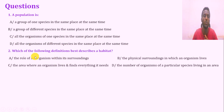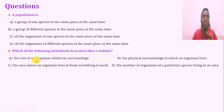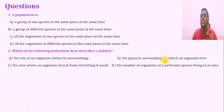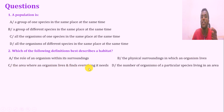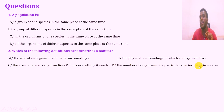Question number two: which of the following definitions best describes habitat? a. the role of an organism within its surroundings; b. the physical surroundings in which the organisms live; c. the area where an organism lives and finds everything it needs; d. the number of organisms of a particular species living in an area.